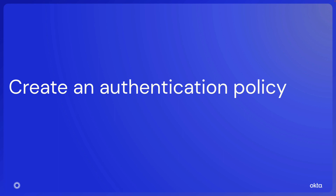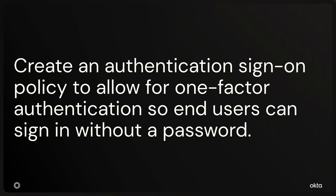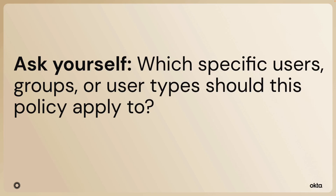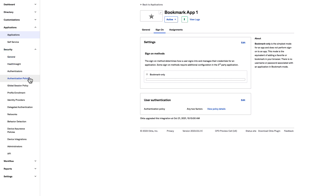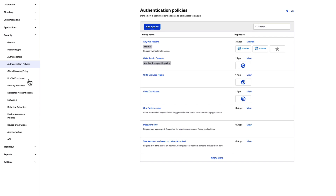Next, create an authentication policy to allow for one-factor authentication so end users can sign in without a password. When you create an authentication policy, you should consider who the policy applies to — which specific users, groups, or user types. In your Admin Console, navigate to Security, Authentication Policy, and select One Factor Access.